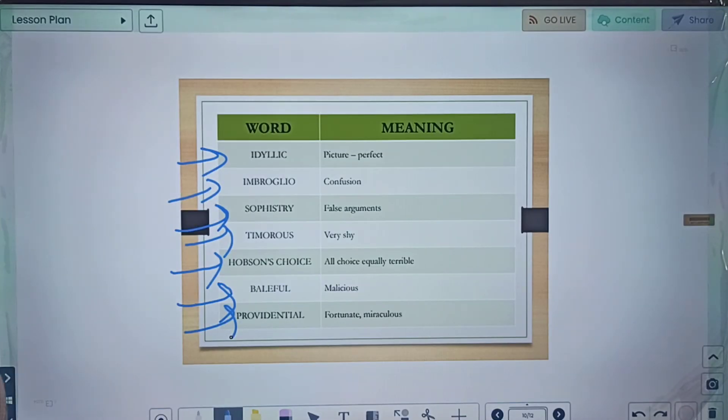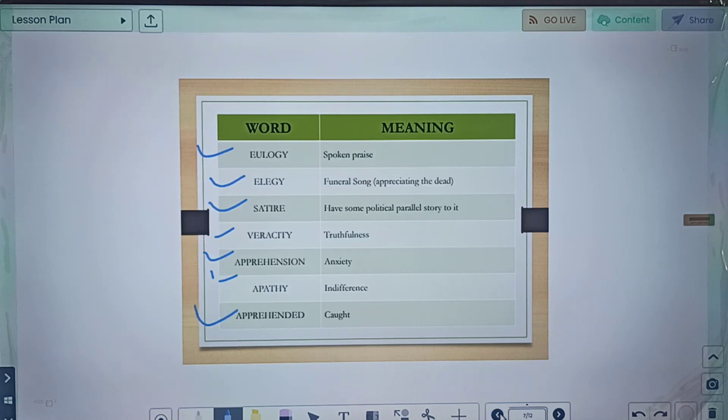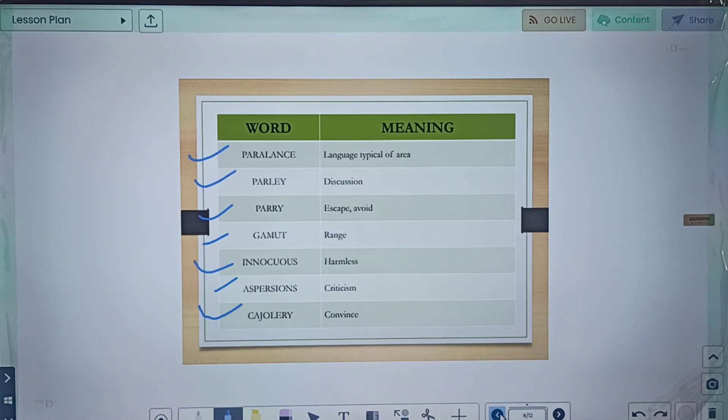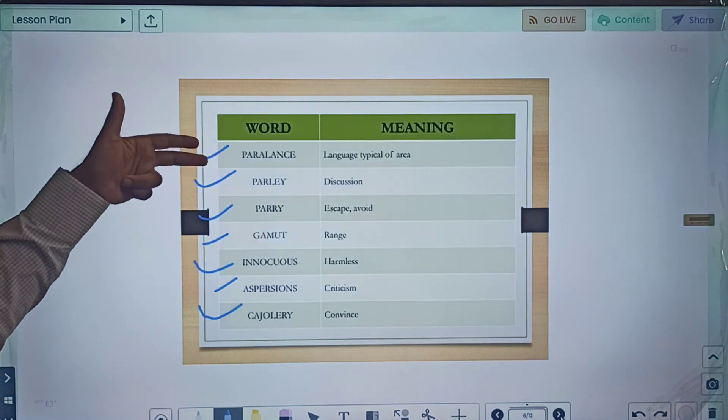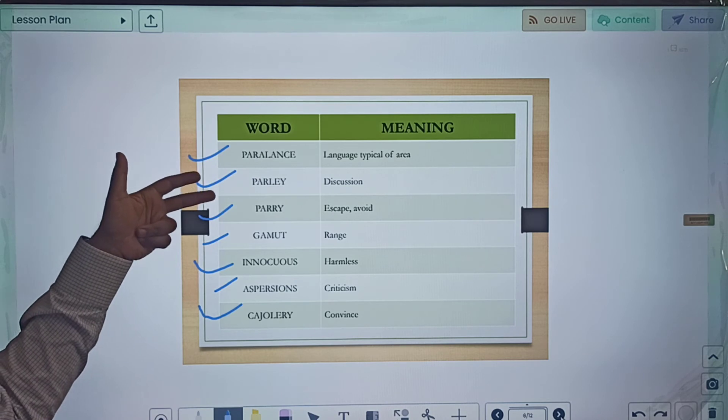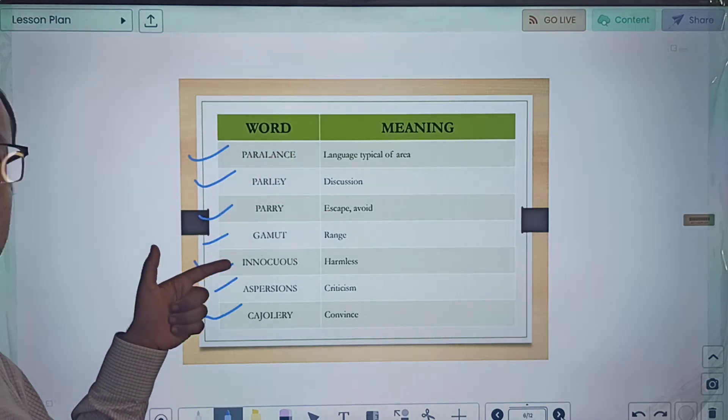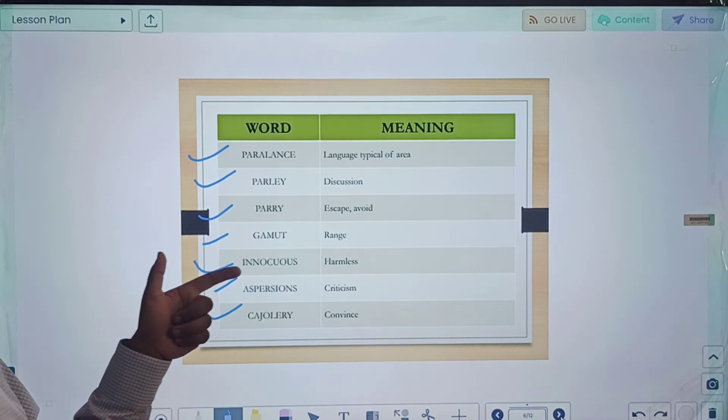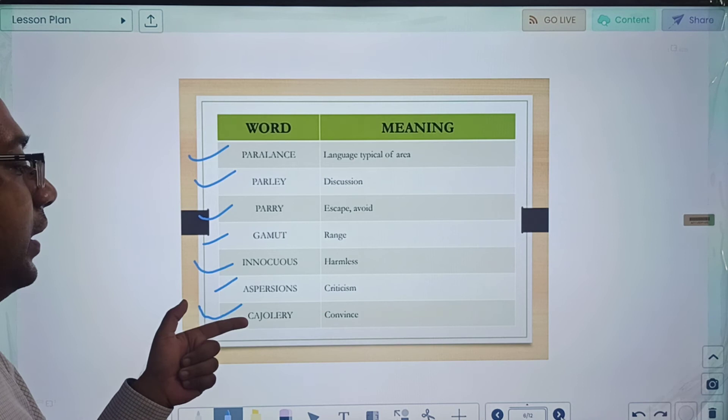Let us just quickly have a quick revision of the 35 words that we did. We started with our first set: parlance meaning language typical of area, parley discussion, parry escape or avoid, gamut range, innocuous harmless, aspersions criticism, casuistry convince.